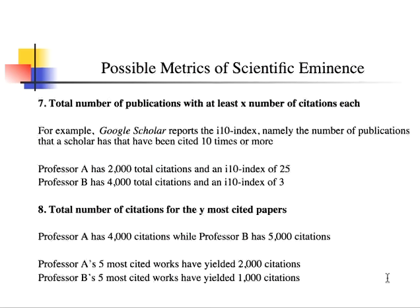We could also look at the total number of publications with at least X citations each. You may have 100 publications, but how many have at least 10 citations each? That's exactly what Google Scholar's I-10 index does — it reports the number of publications that have been cited 10 times or more. There's nothing magical about 10; it just represents a paper that has received at least some attention.